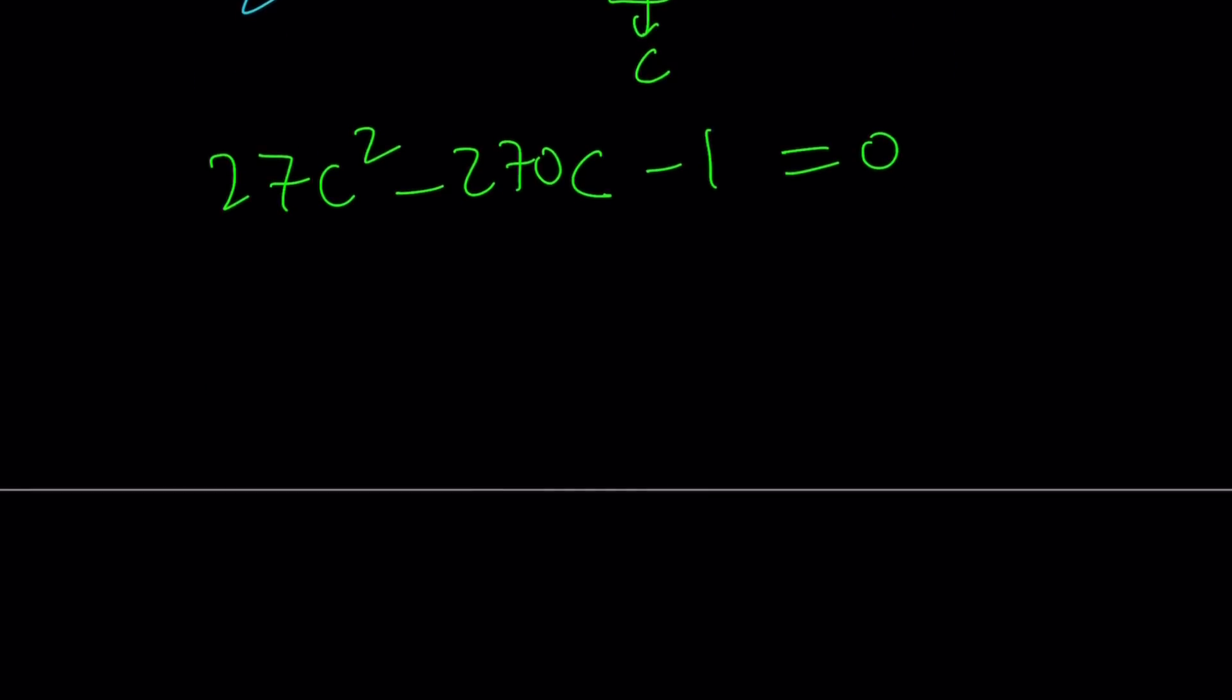And if you solve this quadratic equation, you get the following: c = (45 ± 26√3)/9. And this should equal a³.